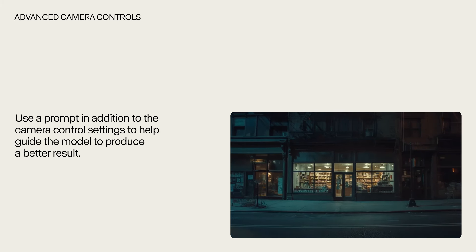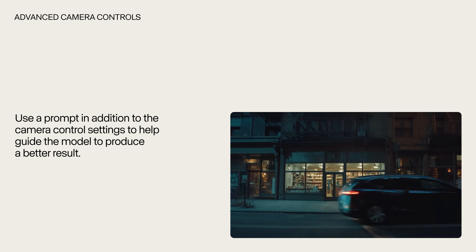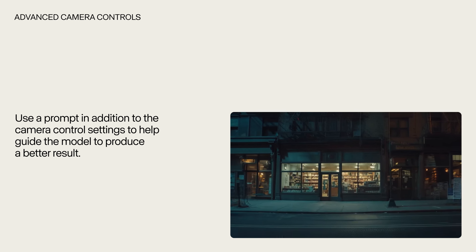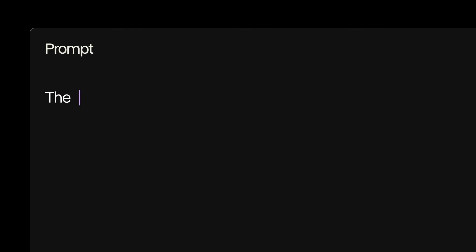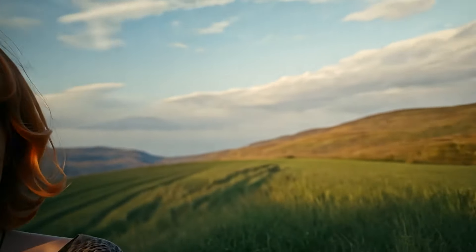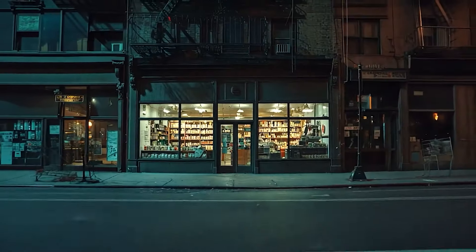The second most important thing to know is camera controls will generally work better if you provide a prompt. This will help guide your generation to give you the best result. You can prompt for where you want the camera to move, what you want your subject to be doing, or even add more to the scene.